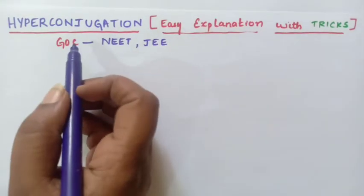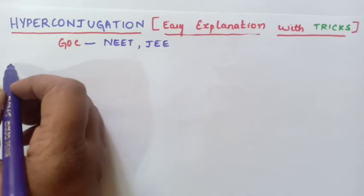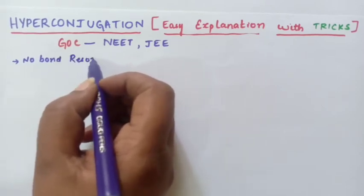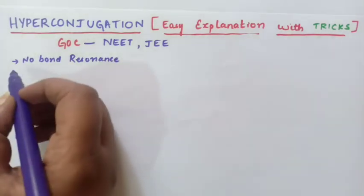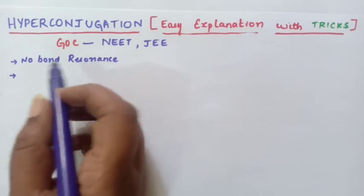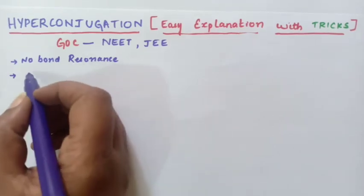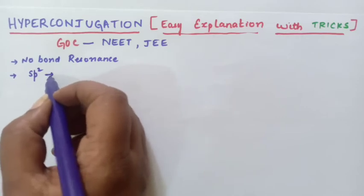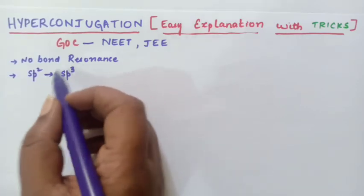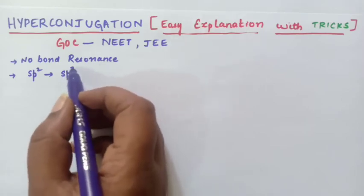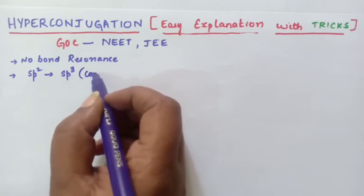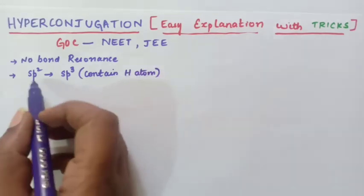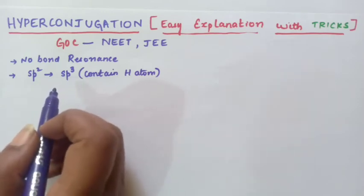So what is hyperconjugation? Hyperconjugation is also known as no bond resonance. For hyperconjugation to take place, an SP2 carbon and an SP3 carbon should be attached to each other. That is, the SP2 carbon should be attached to the SP3 carbon, and this SP3 carbon should have a hydrogen atom with it. This is the main basic requirement for hyperconjugation to take place.